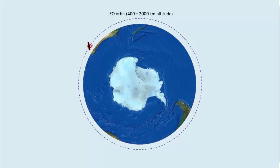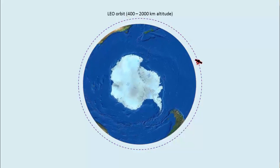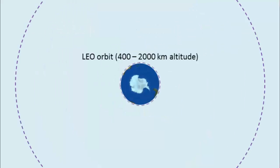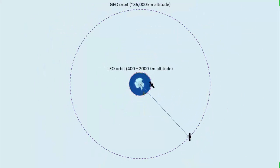To be geostationary, the satellites must match the Earth's rotation with an orbital period of 24 hours. To have this long orbital period, the satellites must be parked higher at about 36,000 kilometers above the Earth's surface.